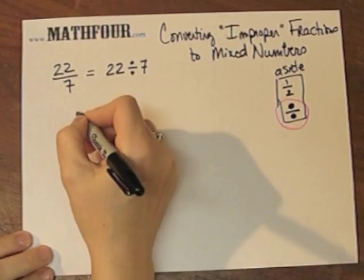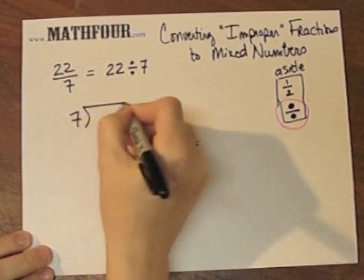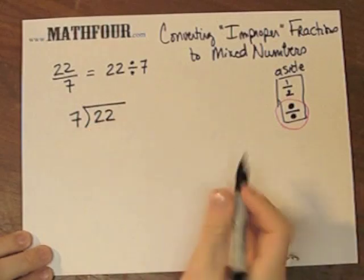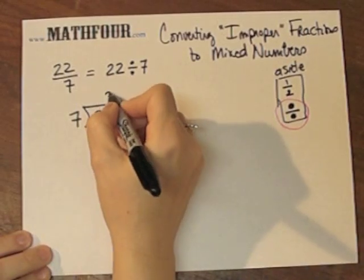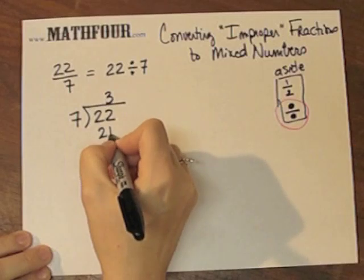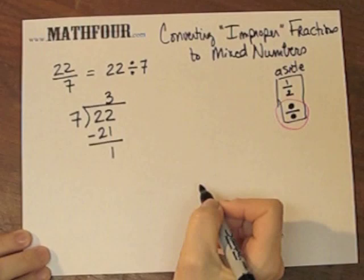So this means 22 divided by 7. So we can actually do 7 into 22. So 7 goes into 22 three times. 3 times 7 is 21. Subtract, and then we have 1 remaining.